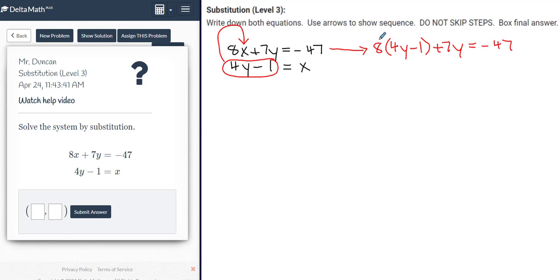We are going to distribute here, and that's a positive 8, to remove the parentheses. 8 times 4y, that's going to result in 32y. 8 times negative 1 is negative 8. Plus 7y is equal to negative 47.